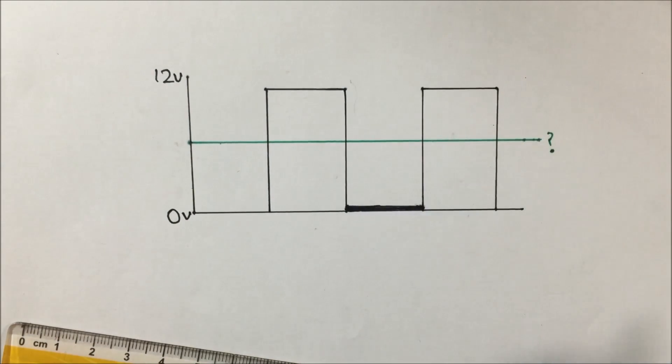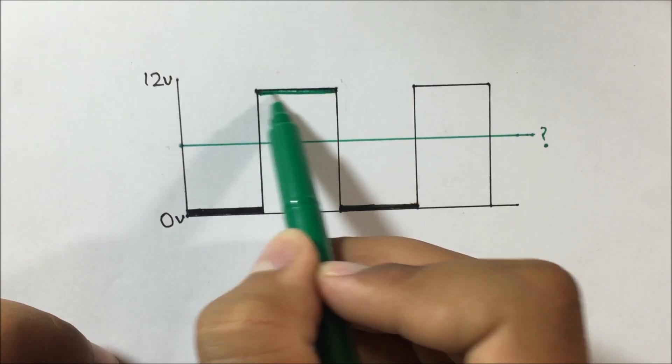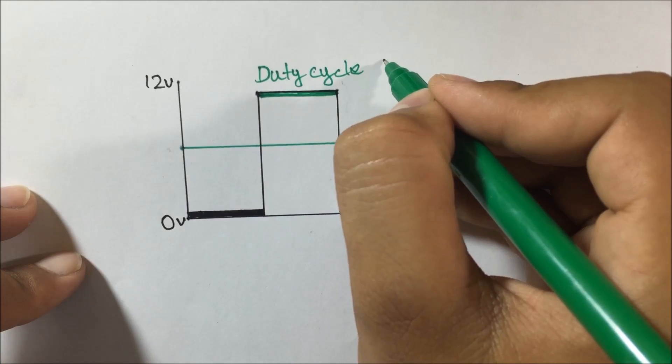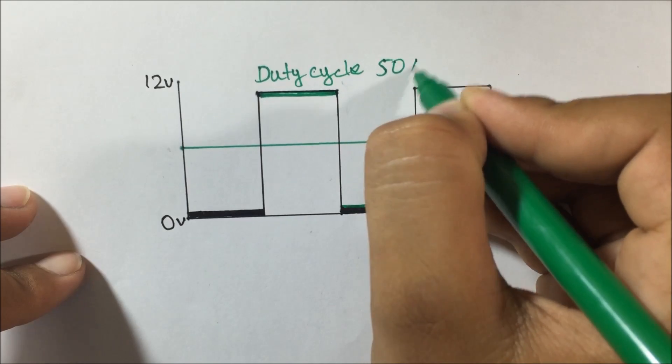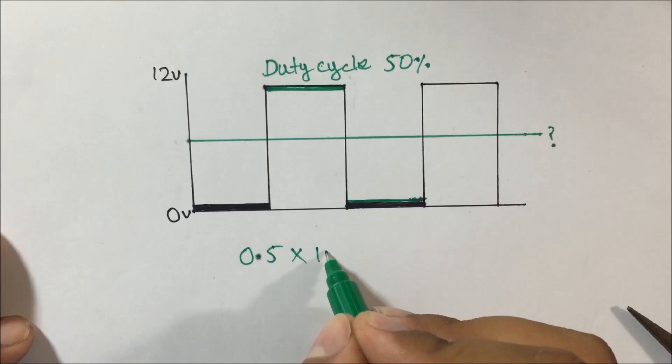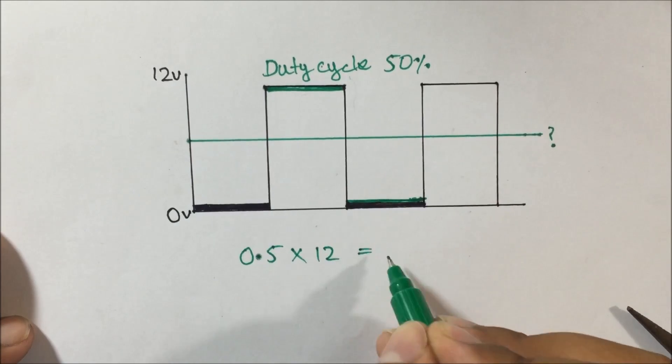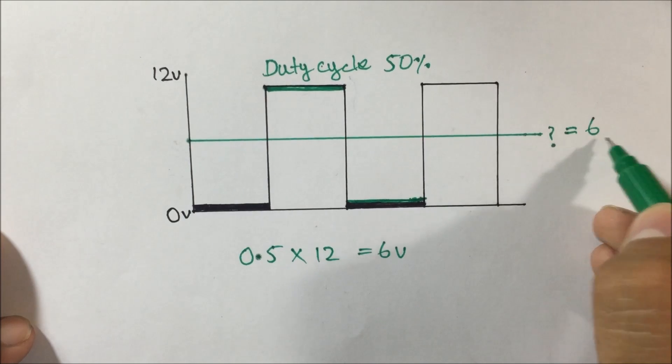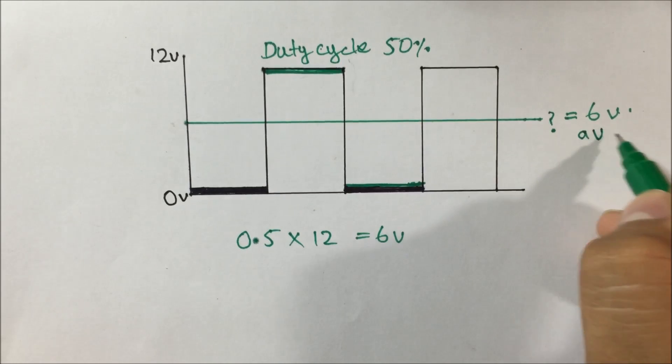We can determine this voltage level by taking the amount of time in which the pulse wave is on versus off, this is known as the wave duty cycle. We can multiply this amount by the high level which is 0.5 times 12. So our signal has average of 6 volts.